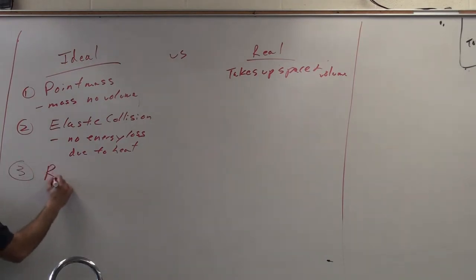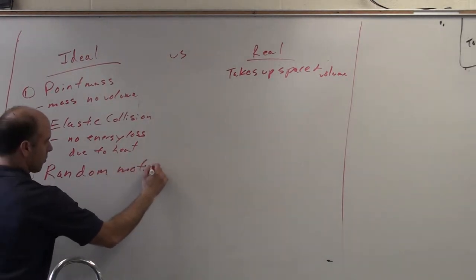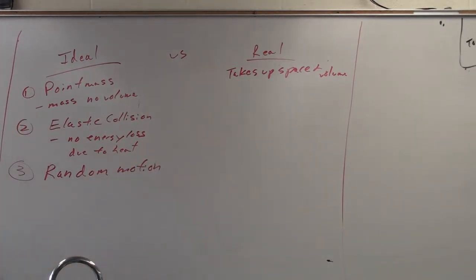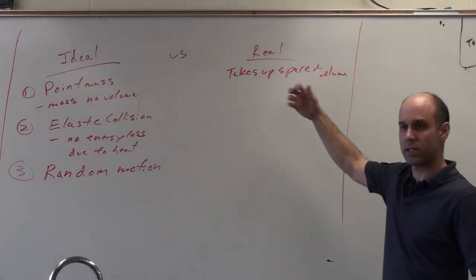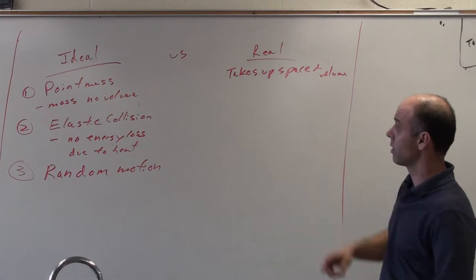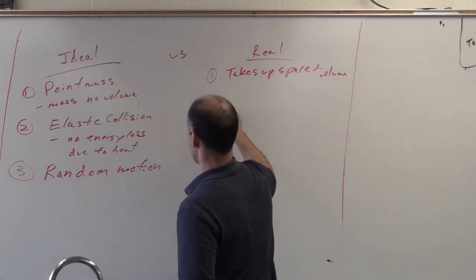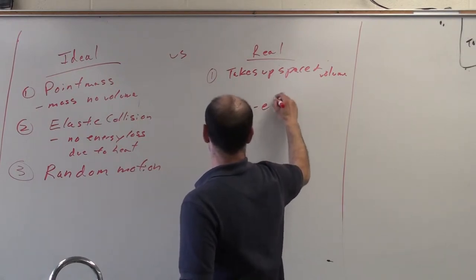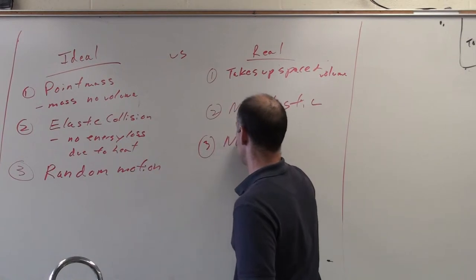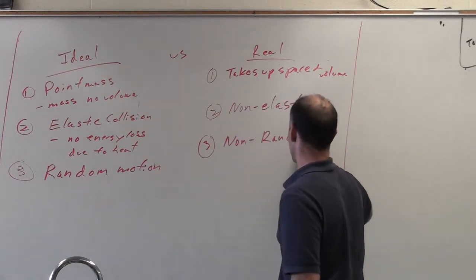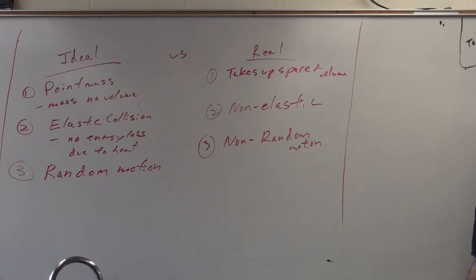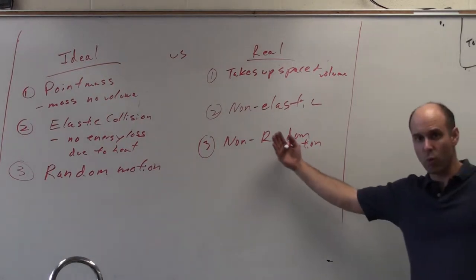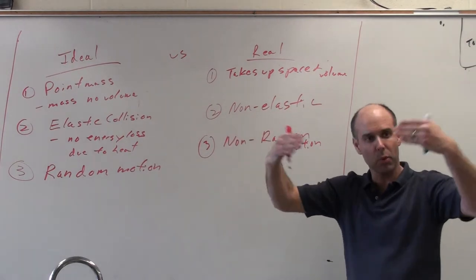And the third. Random motion. We assume that the gas particles are moving independently of each other. So then obviously with real gases, it's just the opposite. Collisions aren't elastic. Motion is not random. Because gas particles can attract each other if they get close enough. Or if it's a polar gas. Like if you're talking about water vapor in the air, H2O is polar. So if you've got two water molecules floating around in the air, if they get close enough, their dipoles are going to attract.